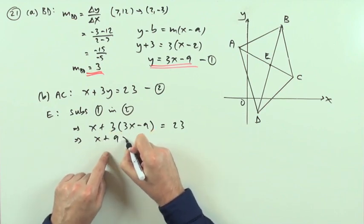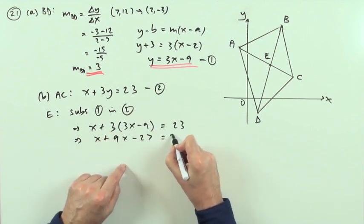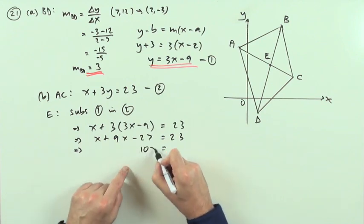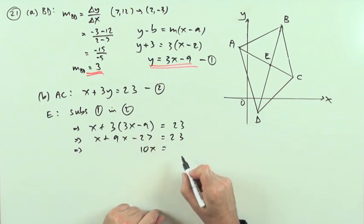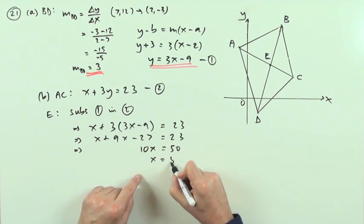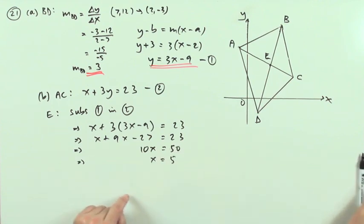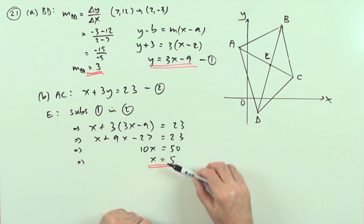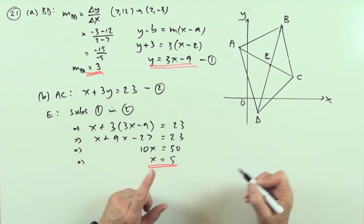x + 9x - 27 is 23. Gather that up, that's 10x. Take the 27 over to the other side and that will make 50. That gives me x = 5. You don't need to show at the higher level, I don't need to show every single little step of that calculation to solve that equation. Then the second part would be what's the y coordinate.